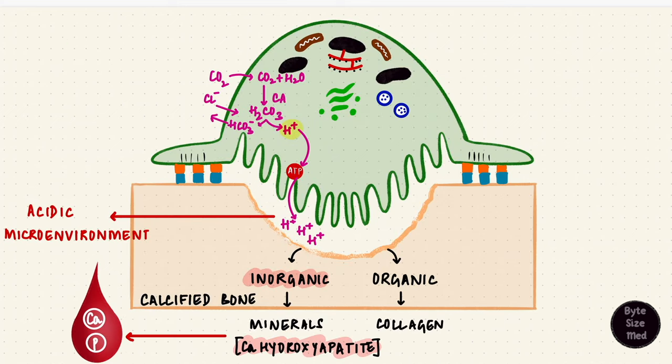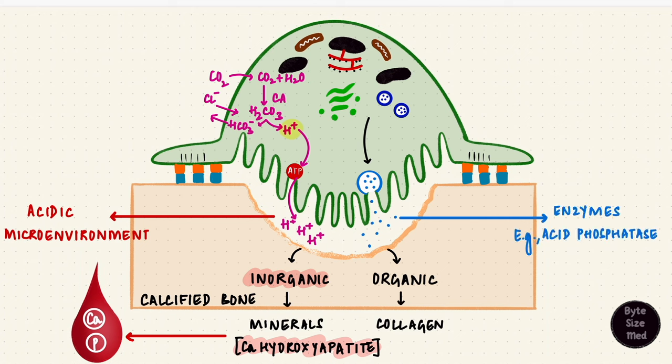But bone also has those organic components like collagen and ground substance. The osteoclast vesicles have enzymes like acid phosphatase, acid hydrolases, matrix metalloproteinases like collagenase which digest those organic components when they're released again into that sub-osteoclastic zone. The osteoclast has now resorbed bone.